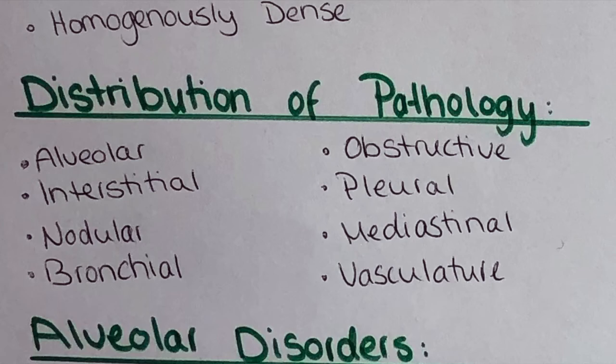Other pathologies include pleural — so of the lining covering the lungs — mediastinal, meaning of the most medial space of the thorax where the heart and the major blood vessels are located, or it can be the vasculature, where the blood vessels have some kind of disorder which might be visible on an x-ray.